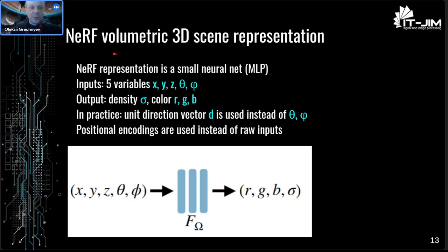When you train NOF, it freezes — and freezing for some reason is called "baking" in the NOF world. So it freezes or bakes the lighting conditions that happened at the training time. Once NOF is trained, you cannot change the lighting. NOF has a volumetric 3D scene representation. It is a small neural network. Input is five variables: x, y, z and direction. Output is density sigma and color RGB. In practice, they use a unit direction vector d instead of polar coordinates, and positional encodings are used instead of raw inputs.